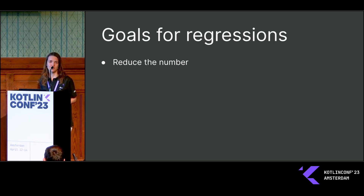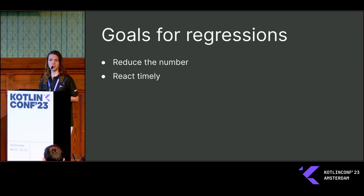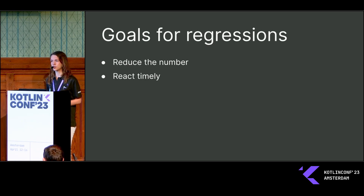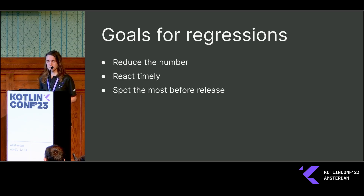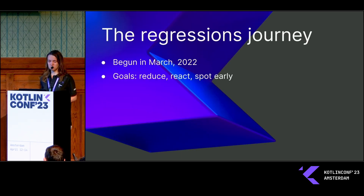After realizing where we were, we decided on our goals. First, we wanted to reduce the number of regressions. Second, we wanted to react in a timely manner — we didn't want to release anything with already submitted regressions that we could have fixed before the release but hadn't looked into in our tracker. From then on, we wanted to react to every single submitted regression within a week.